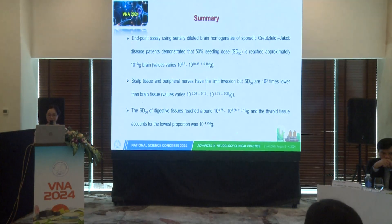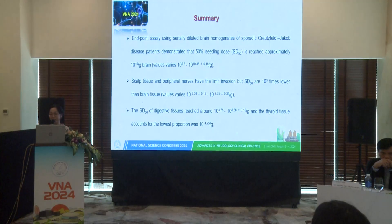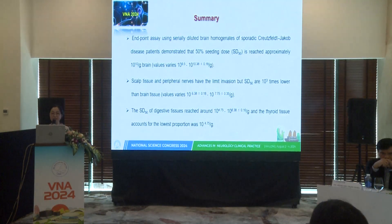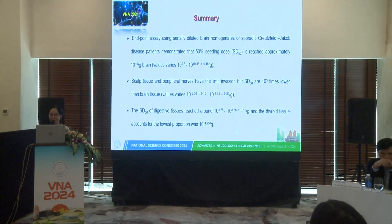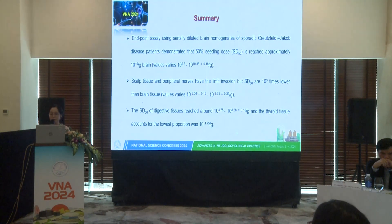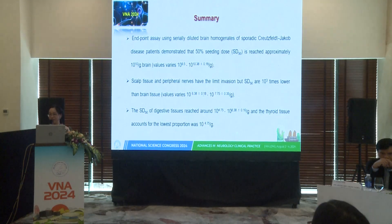In summary: the endpoint adequacy assay using serially diluted brain homogenates in sCJD patients showed log ID50 upwards of 10 to the power of 10 per gram tissue. Scalp and peripheral nerve had limited infectivity, with ID50 approximately 1,000-fold lower than brain. The ID50 of digestive tissue ranged from 10^4.75 to 10^8.38 ± 0.16 per gram, with thyroid accounting for the lowest.